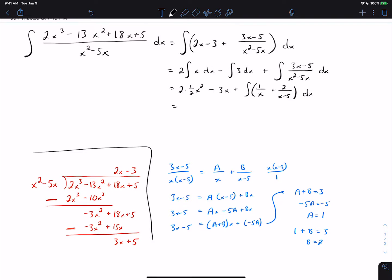We can split that up into two integrals and pull the 2 out of the second integral. That gets us x squared minus 3x plus log of absolute value of x plus 2 log absolute value of x minus 5 plus c.